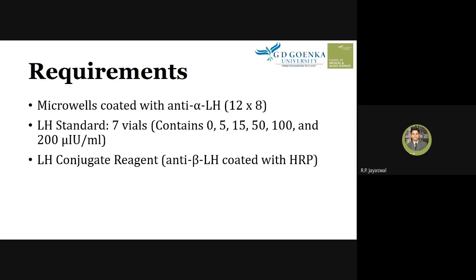Two antibodies are used here: the antibody coated to the wells is directed against the alpha subunit of LH, while the conjugate antibody (enzyme-labeled) is directed against the beta subunit of LH. This is why two different antibodies are used — they bind to specific subunits of the LH structure.